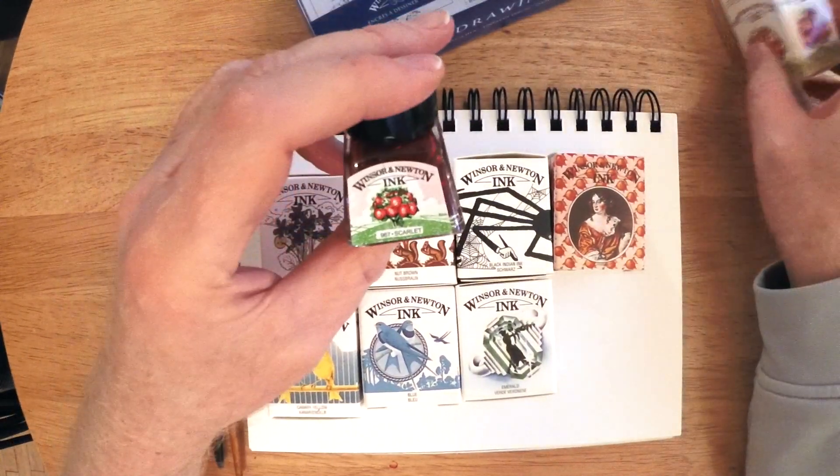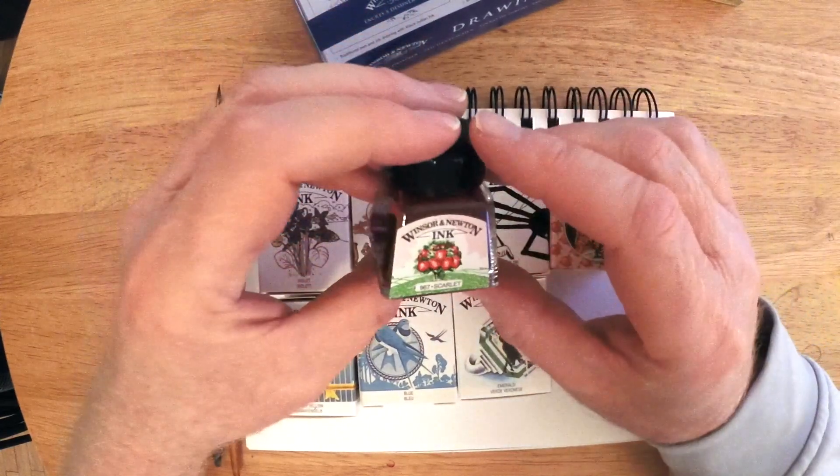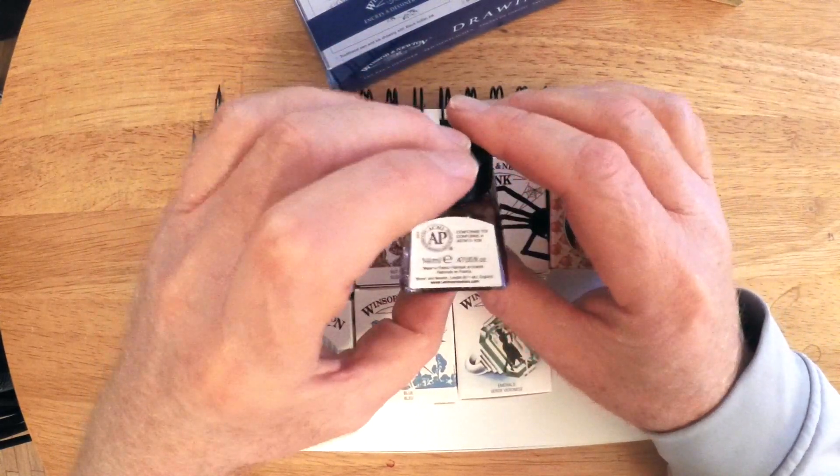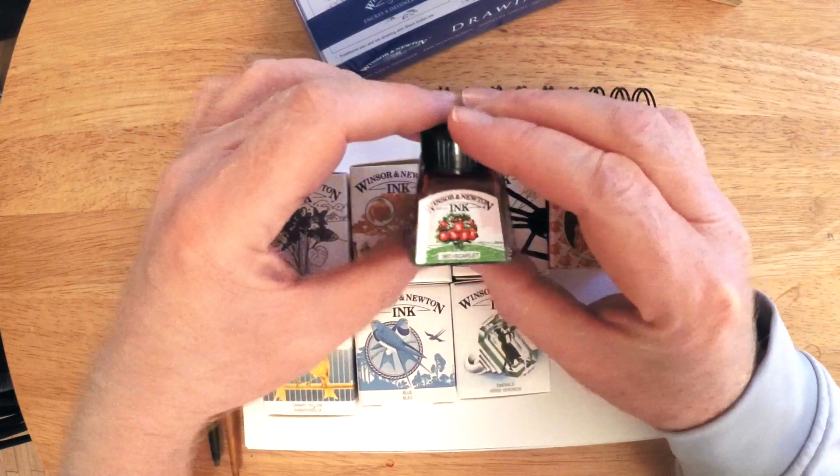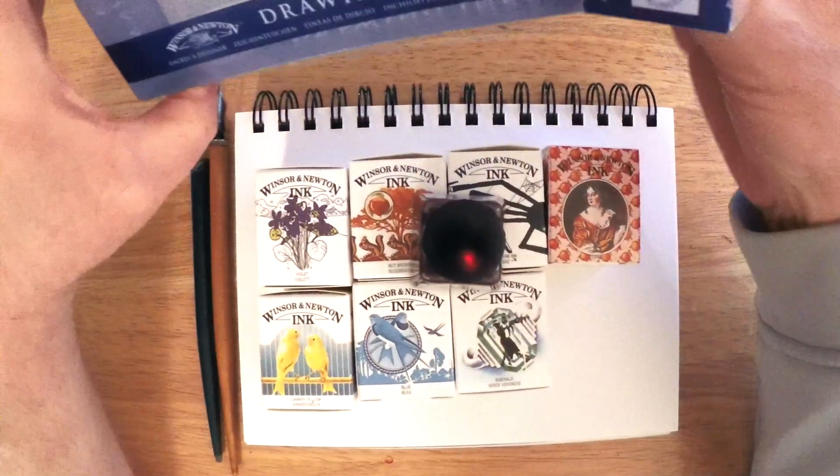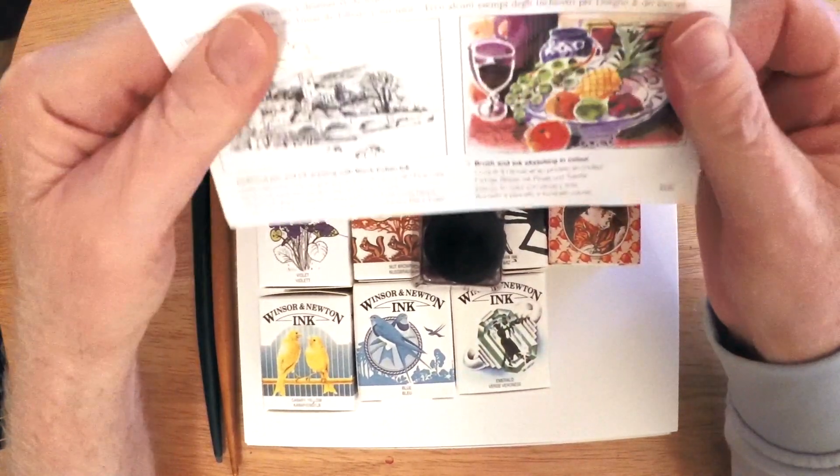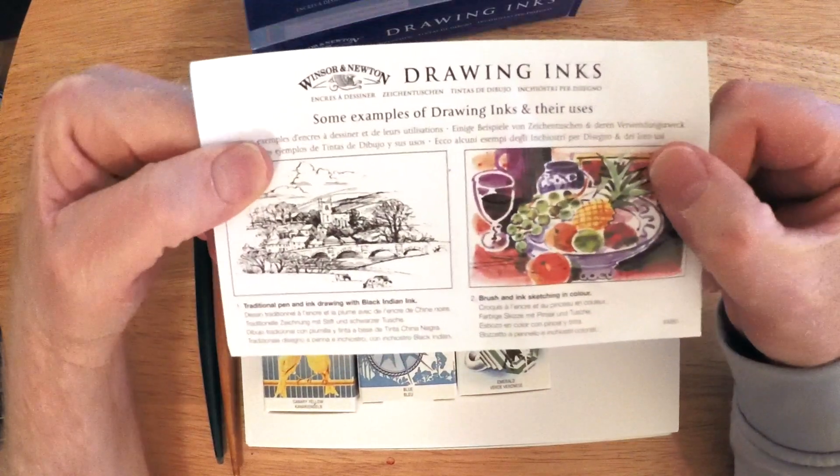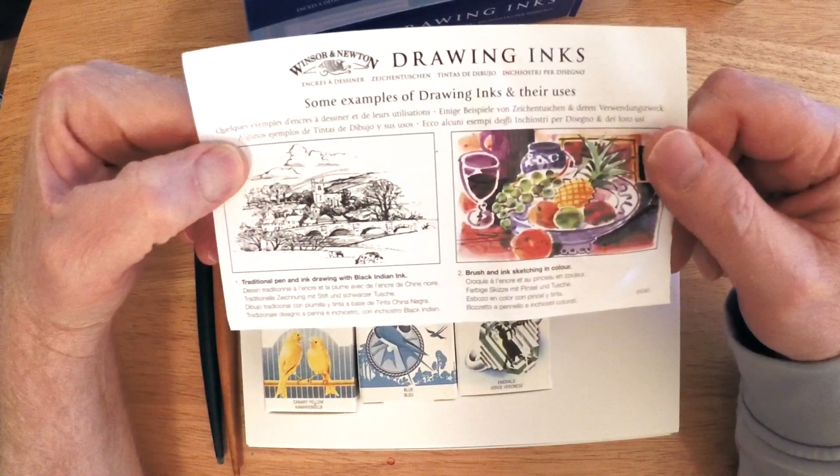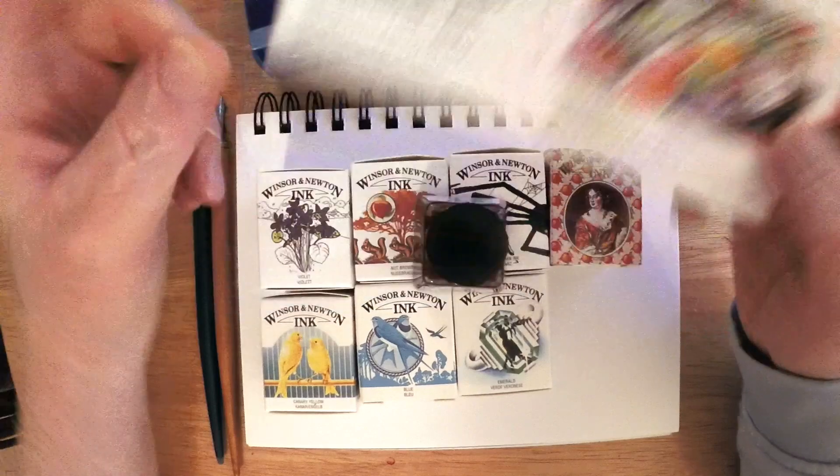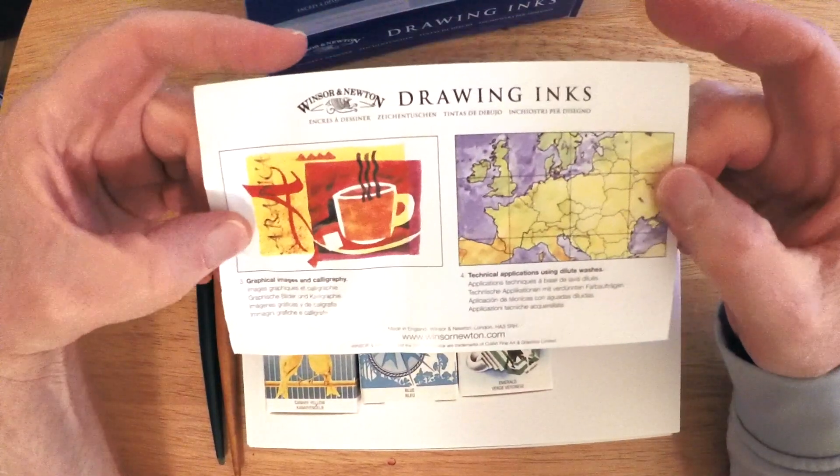One thing you have to remember about Windsor and Newton ink is that there's a shellac in this ink. It's water soluble, so you can rinse it, wash it out with water if it gets on your pens or your skin or whatever. But the thing with these is they have a shellac in them.